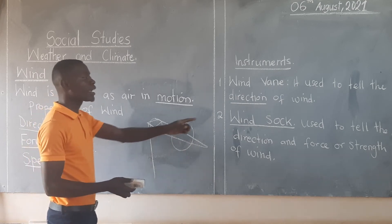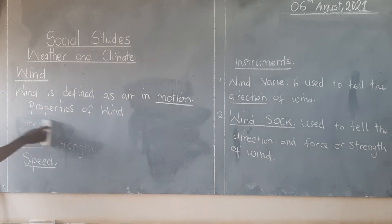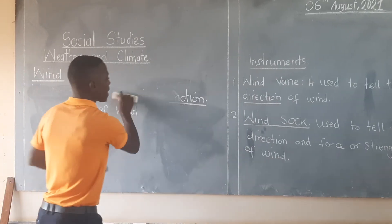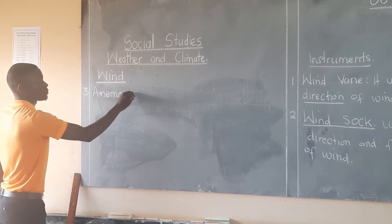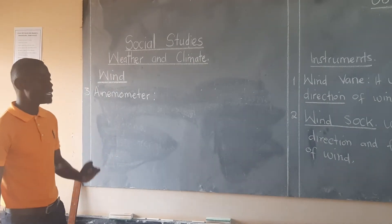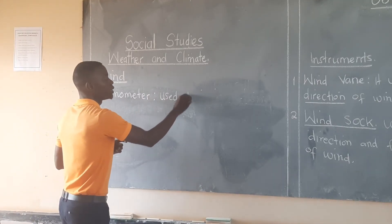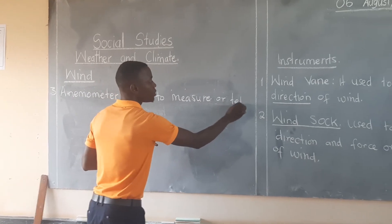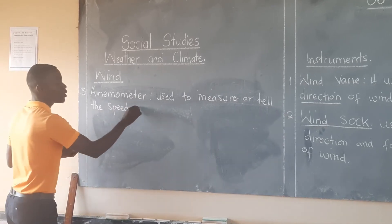We have another instrument which is called the anemometer. Anemometer is another instrument that is used to measure the speed of wind. This one is used to measure or tell the speed of wind.